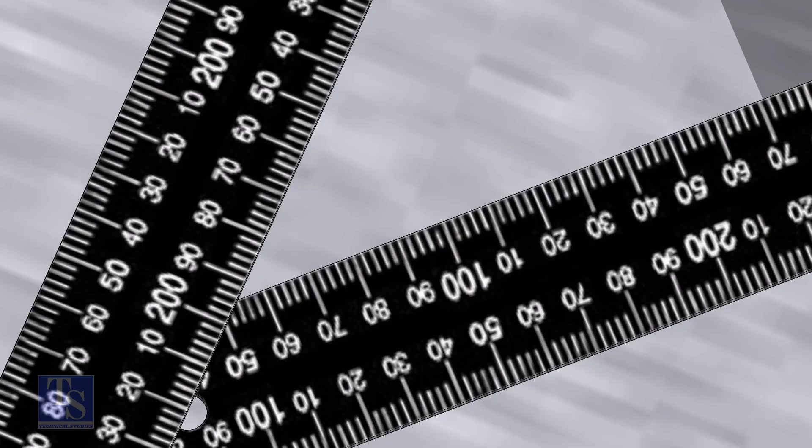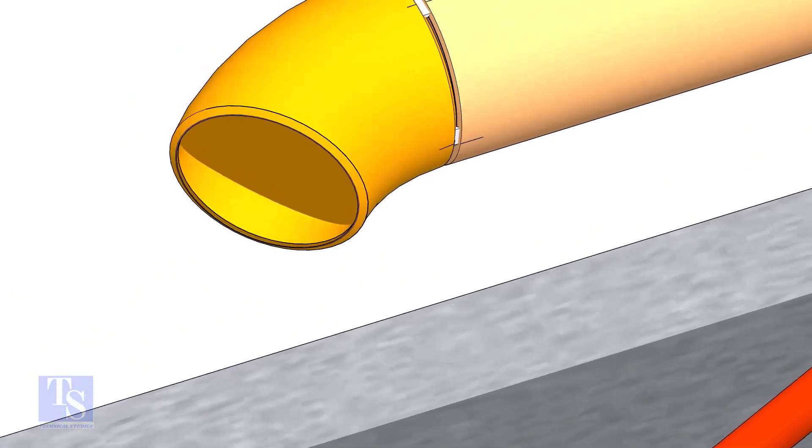Note down the readings. If both the readings are the same, the elbow face is exactly 45 degrees to the pipe.